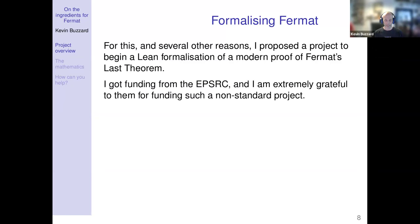Just like Tate proved Serre's conjecture for level-one forms over F_2-bar by proving that the representation would cut out a number field which was too unlikely to exist, the same argument works here. We've got a 3-adic representation unramified outside 2 and 3 and flat at 3. We reduce ρ_3 modulo 3, getting a mod-3 representation. Looking at the kernel gives a number field where we can bound the root discriminant using Fontaine's ideas — flatness at 3 gives a bound on the root discriminant at 3. By Odlyzko we get bounds for the degree of K, and that ultimately takes us to a contradiction.